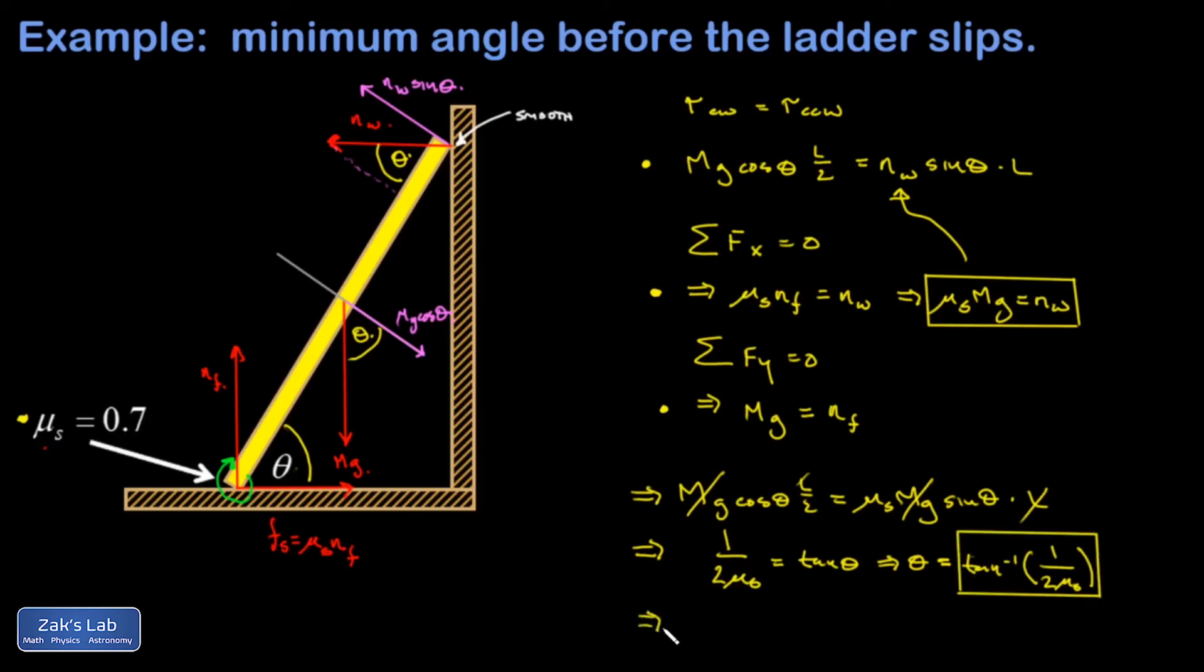And then I can find out specifically what angle this is when our static friction coefficient is 0.7, and when I crunch the numbers I find that it's 35.5 degrees.